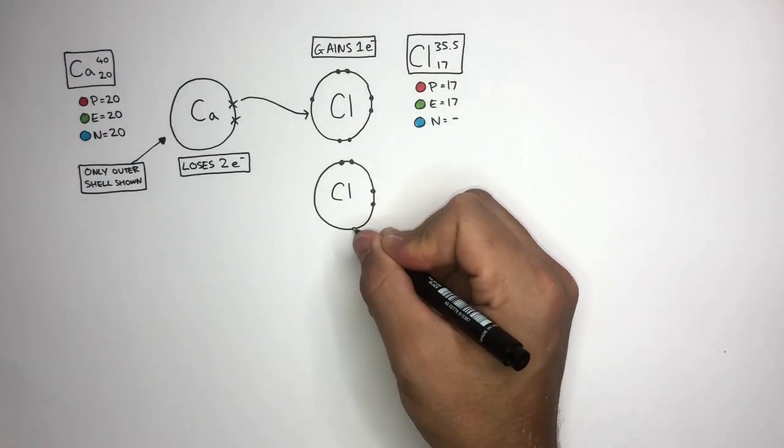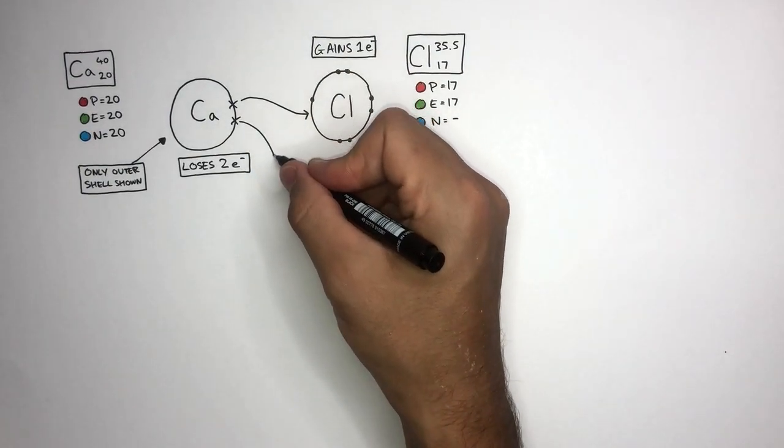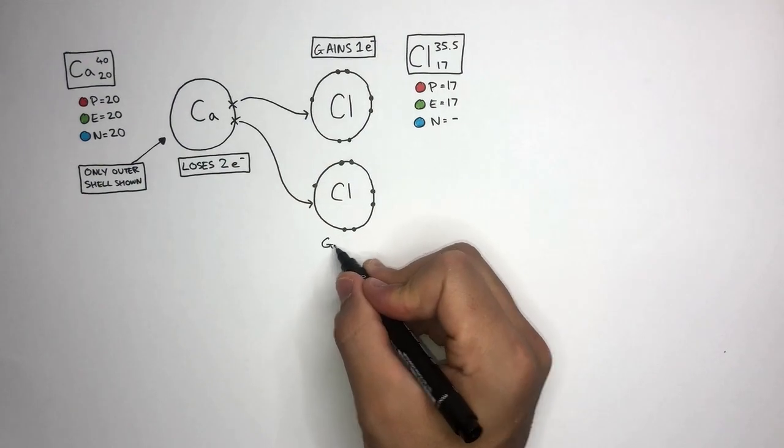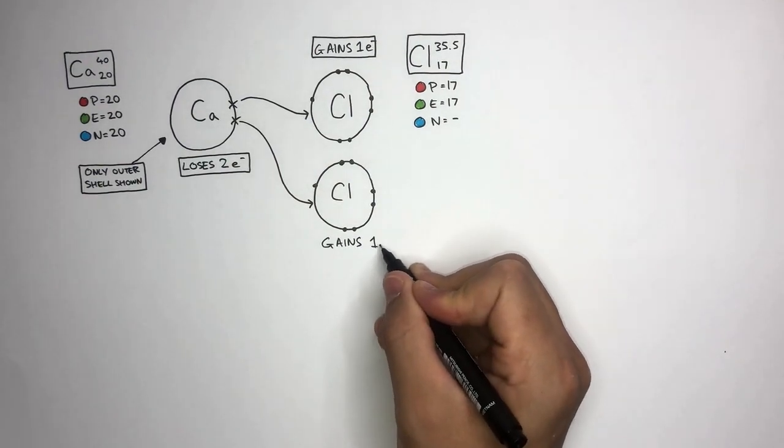Therefore, a second Chlorine atom gains that second electron. So this second Chlorine atom gains an electron.